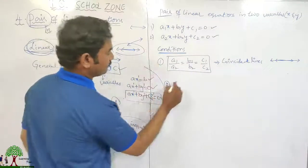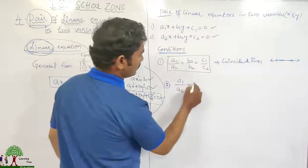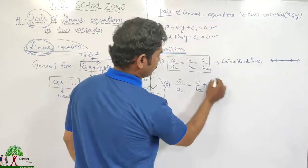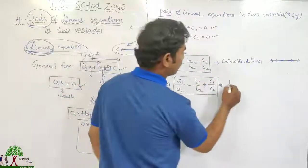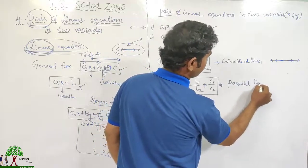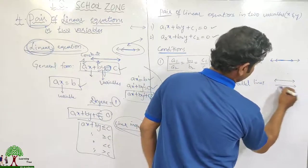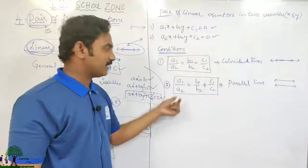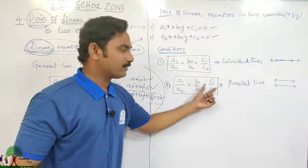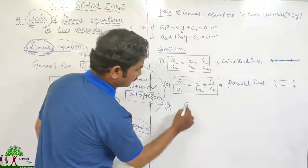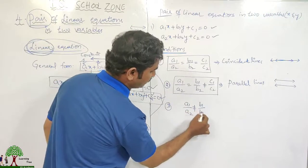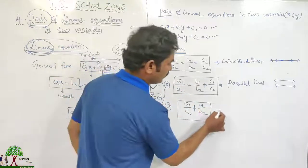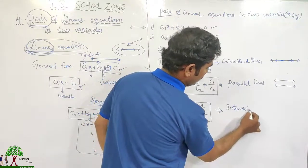The second condition: if A1/A2 equals B1/B2 but not equal to C1/C2, then the two lines are parallel to each other. The third condition: if A1/A2 is not equal to B1/B2, then these two lines are intersecting lines — they meet at exactly one point.